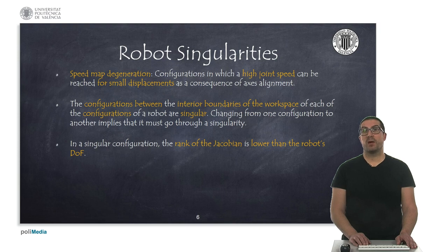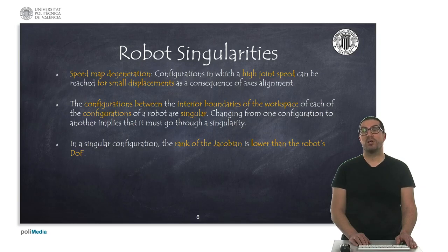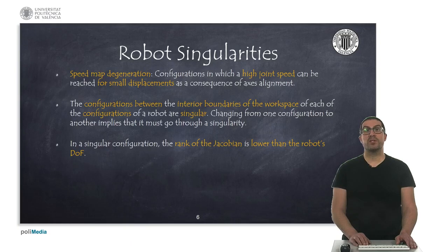Robots can have some singularities. These configurations must be known in advance, so we have to try to avoid them as much as possible, since they imply that the robot will be blocked at some directions. Singularities appear when we try to move the robot in the Cartesian space and the inverse kinematic calculation fails. Singular configurations can cause a speed-map degeneration, that is, they cause high joint velocities for small end-effector displacements.